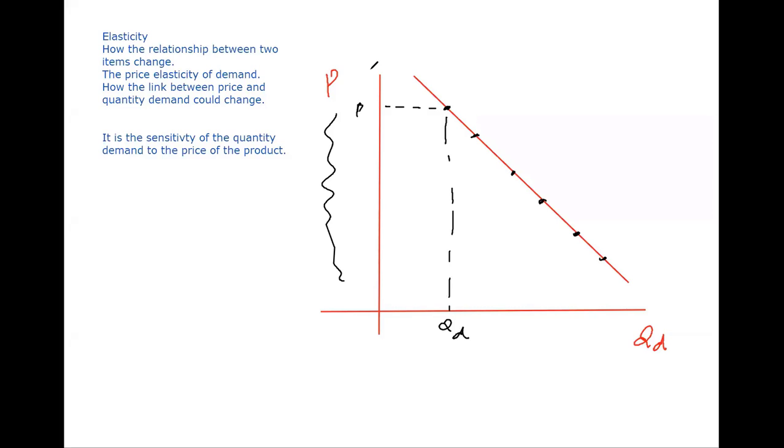This was the difference between quantity demanded and demand. Today's topic is explaining the slope of this line. We discussed in the last class that demand is actually a psychological formula.